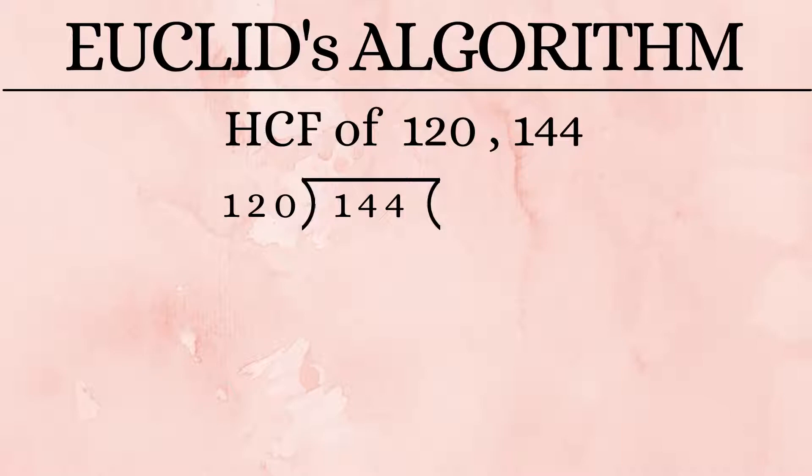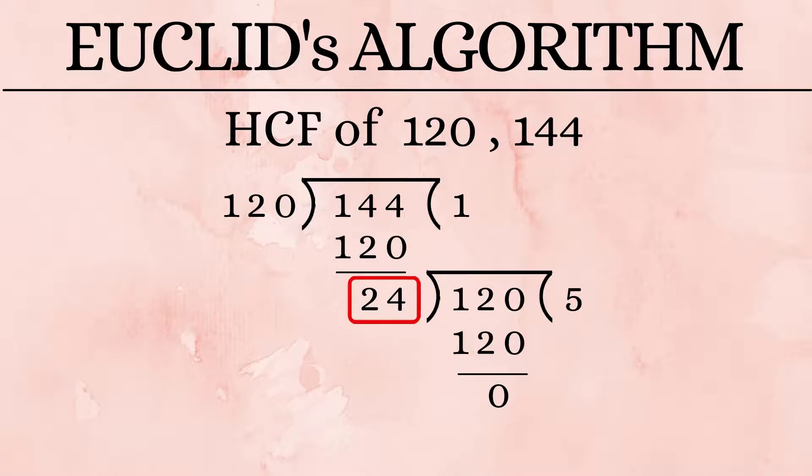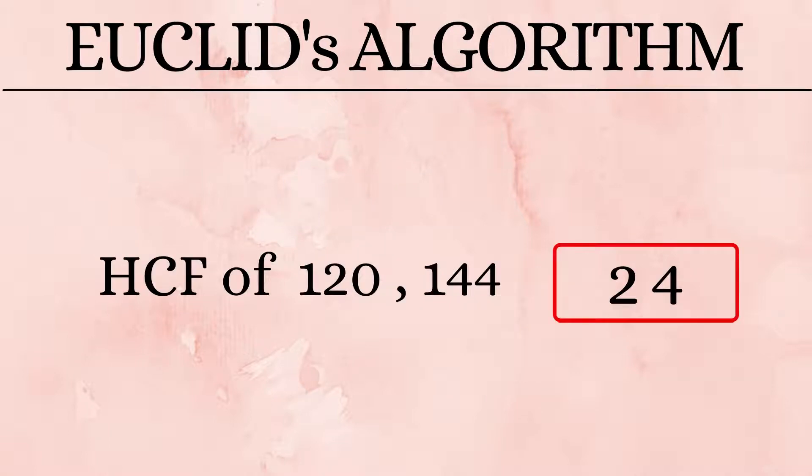So 144 divided by 120 gives us a remainder of 24. The next step is to make the dividend 120 and the divisor 24. So we divide 120 by 24. 5 times 24 is 120, which gives us a remainder of 0. So we stop here and mark our last divisor, and that is 24. So the HCF of 120 and 144 is 24.